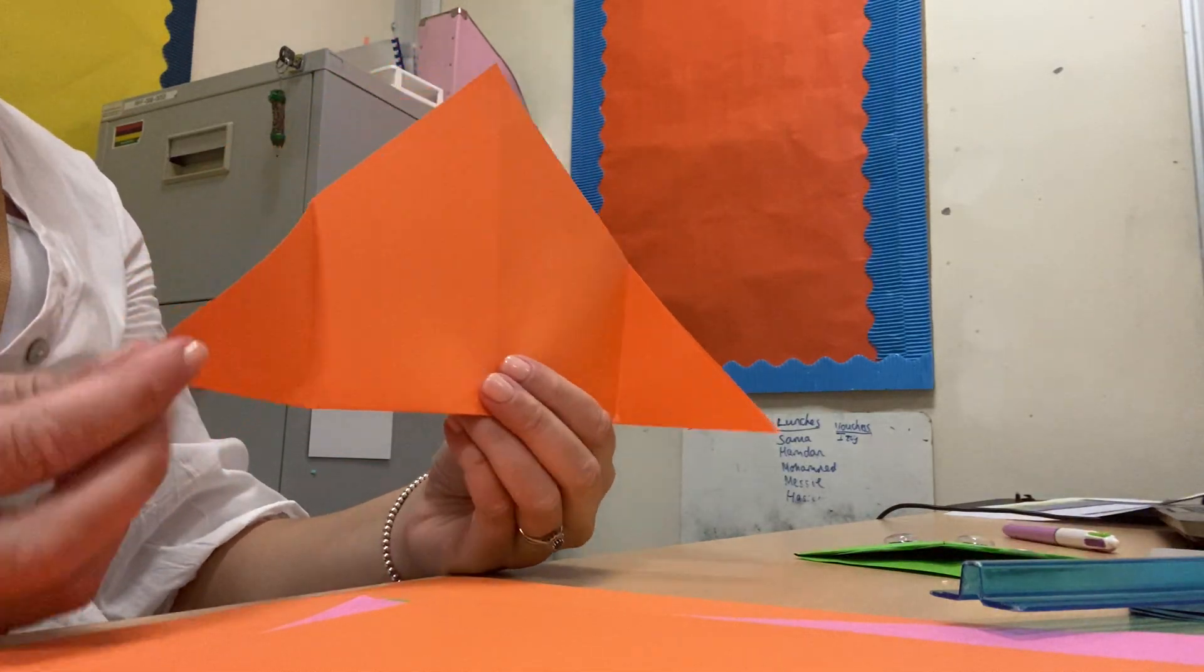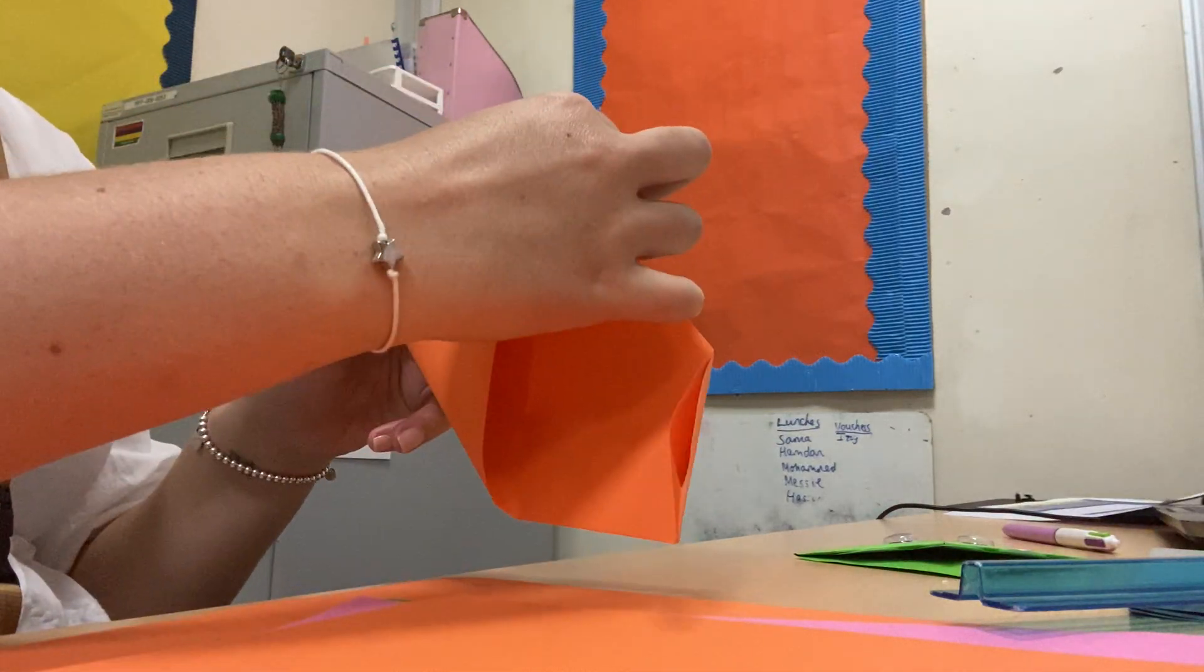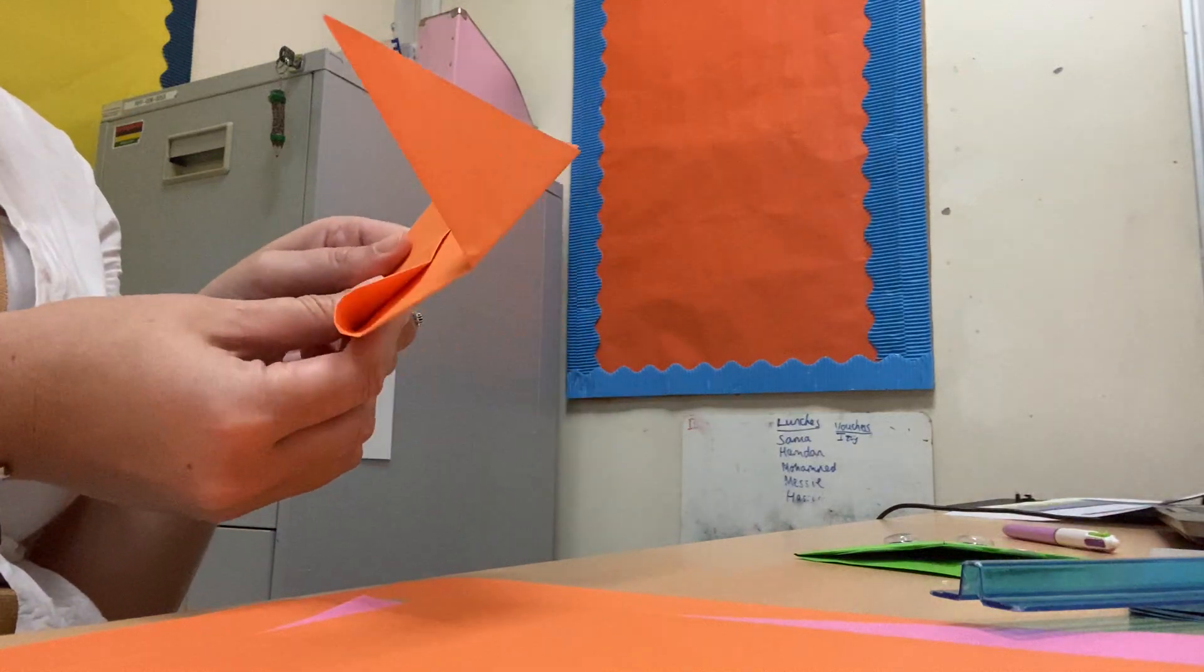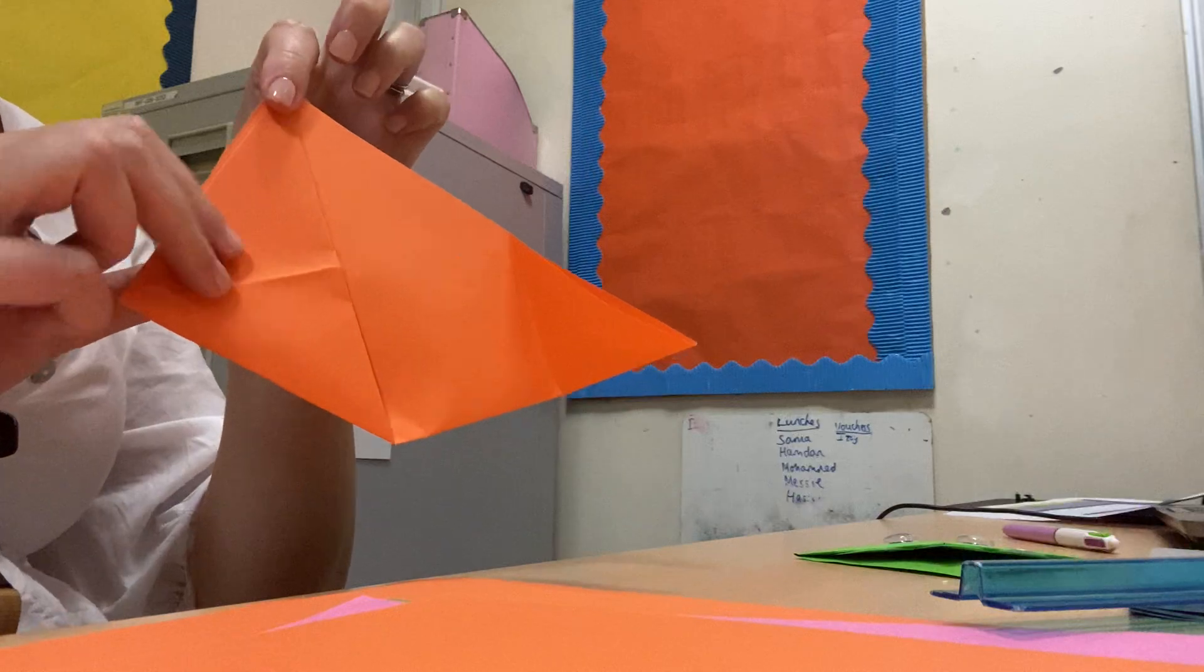You now take the corner again, but this time, fold it till it gets to the top. Again, press it down. So it looks a bit like this. And again, do the same with the other side.